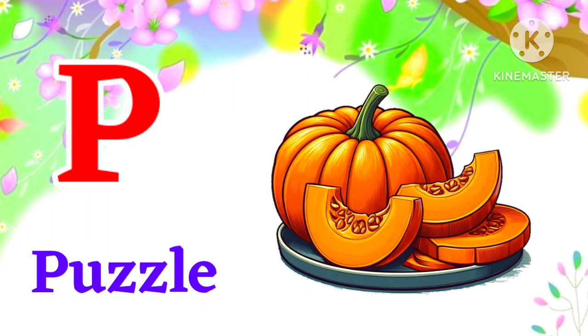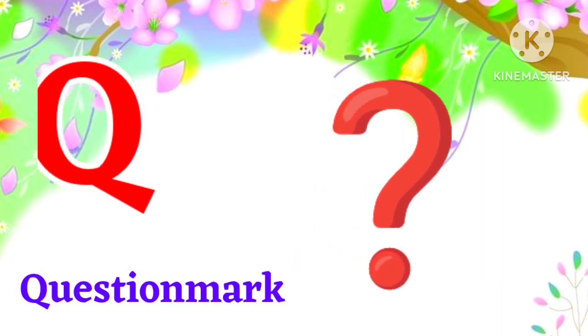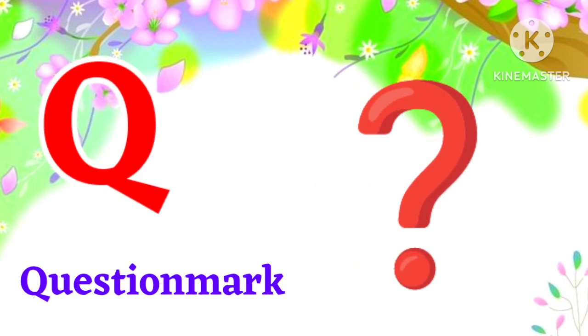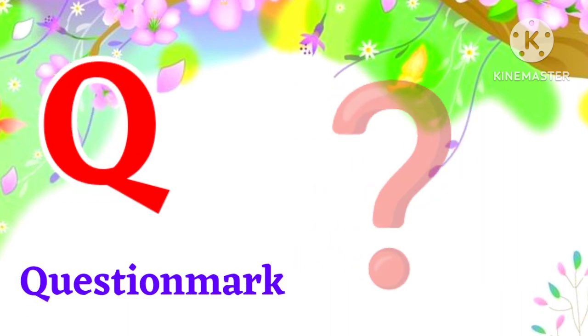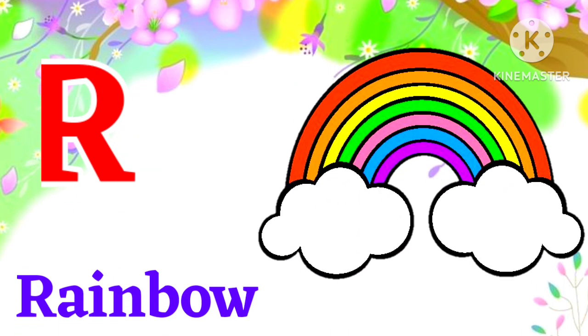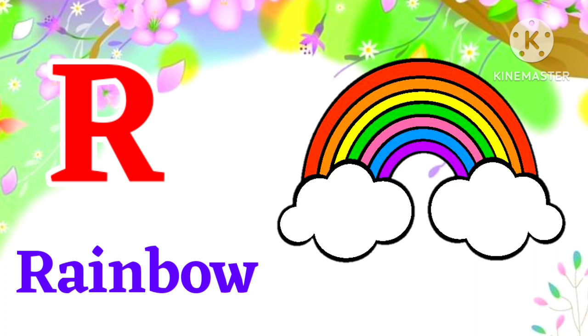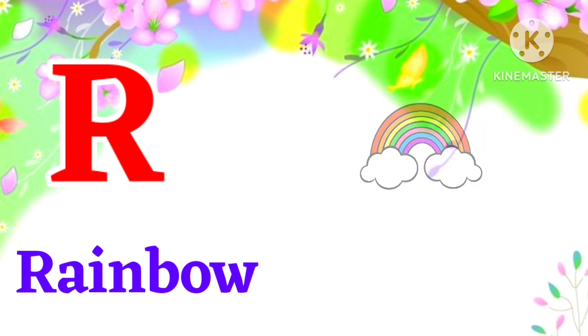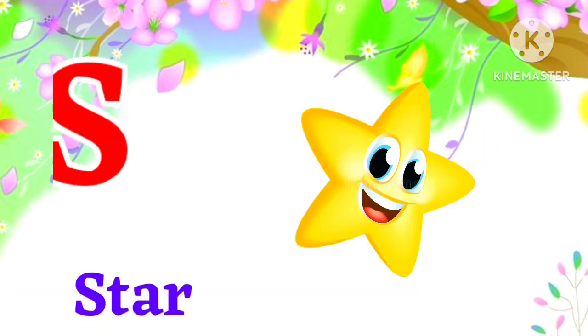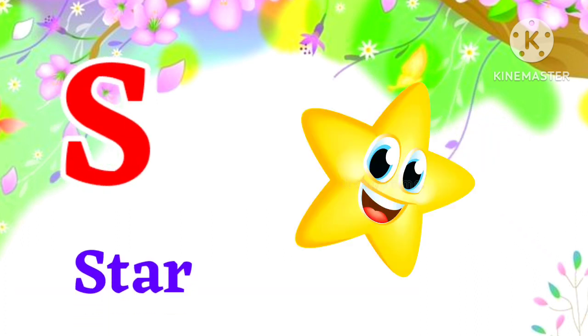P for pumpkin. Pumpkin means pumpkin. Q for question mark. Question mark means question mark. R for rainbow. Rainbow means indradhanush. S for star.